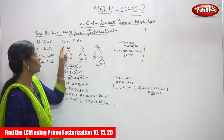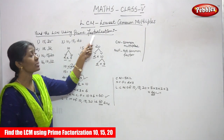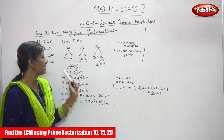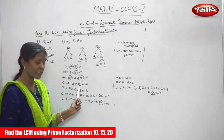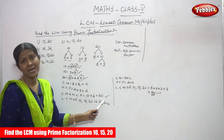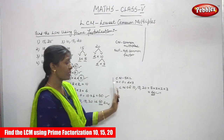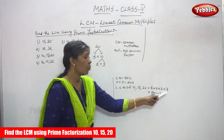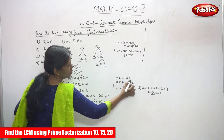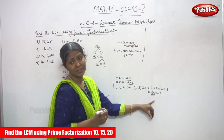So this is the method. For 10, 15, and 20 — three numbers are given. You have to find the LCM using the prime factorization method. First find the factor of 10, then the factor of 15, then the factor of 20. Then write the common multiples, then the not-common factors. Multiply common multiples and not-common factors together, and you will get the answer: 60. So LCM of 10, 15, 20 is 60.